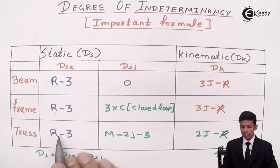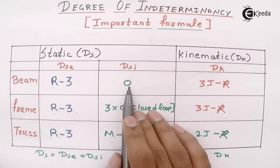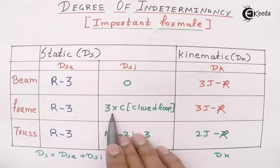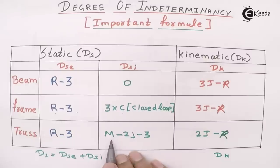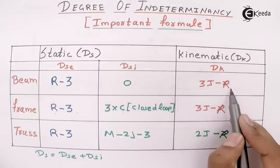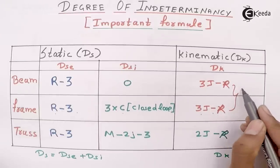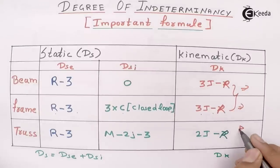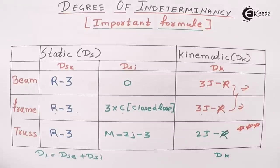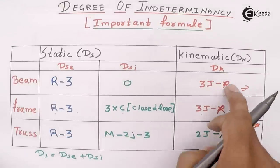For frames, DSE formula is the same: r minus 3. For DSI, in beams DSI = 0, and in frames DSI = 3 × c, where c is the number of closed loops. For truss, the formula is m minus 2j minus 3. In kinematics we use 3j minus r for beams and frames, and 2j minus r for trusses — but we neglect axial deformation, so we focus on the main three formulas.